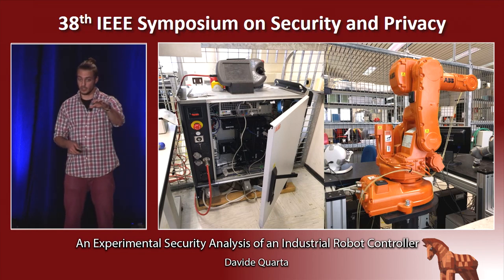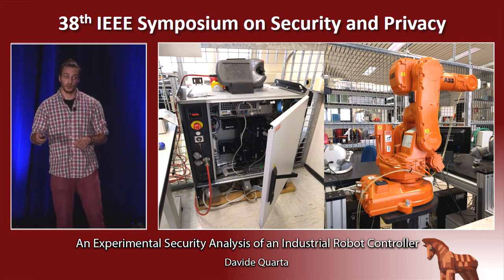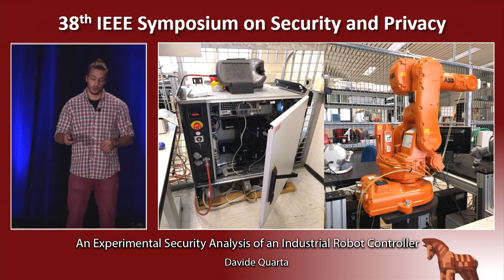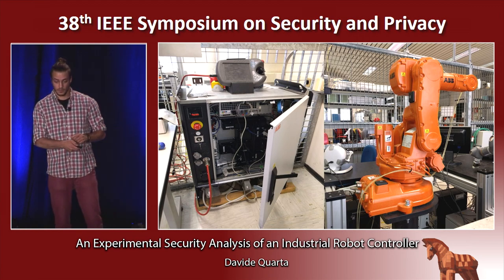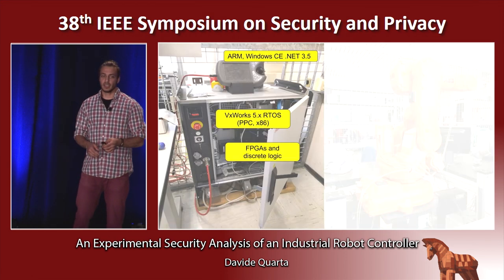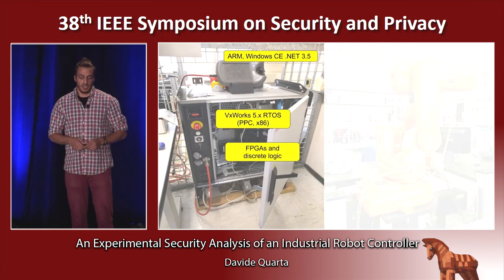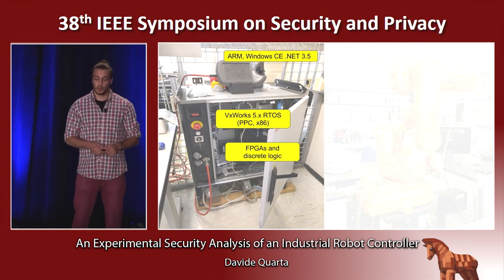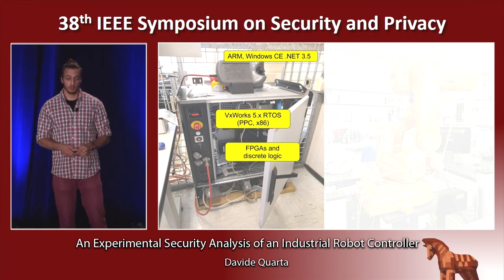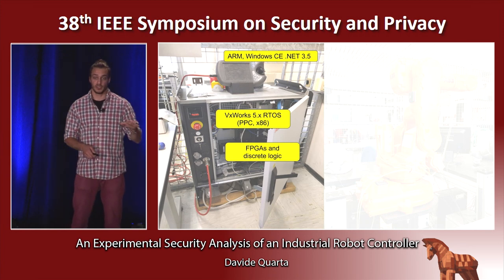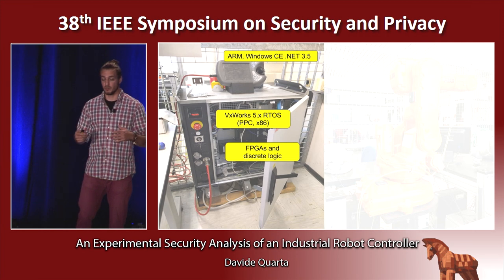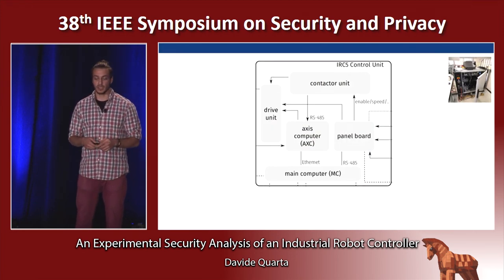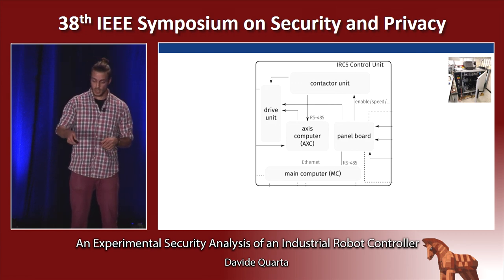To demonstrate these attacks are feasible, we ran a case study on an ABB IRC5 controller — shown on the left with the teach pendant on top — and an IRB 140 six-axis robot shown on the right. Inside the cabinet there are two general-purpose computers, some FPGAs, and discrete logic used for safety measures. The teach pendant runs Windows CE and an outdated version of the .NET framework.